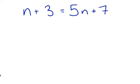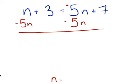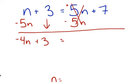Let's do another example. This one is n plus 3 equals 5n plus 7. Same thing — we want to end up with n equals something. So we're going to take this positive 5n and get rid of it by doing the inverse operation, minus 5n on both sides. n minus 5n is negative 4n. We bring down our plus 3, and the 5n's cancel to give us 0, leaving 7 on the right.